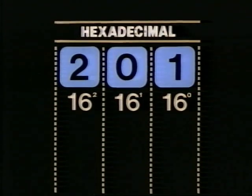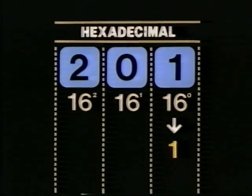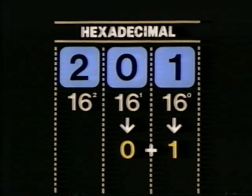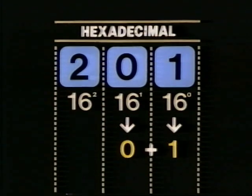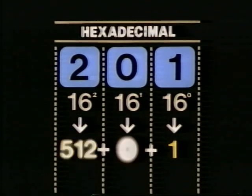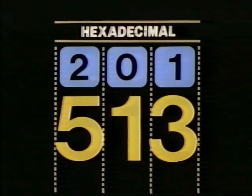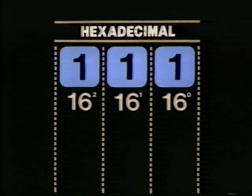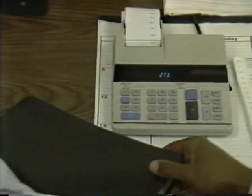Let's look at the hexadecimal number 201. It starts with one times sixteen to the zero, or one times one, or one. The second position is zero times sixteen to the first, or zero times sixteen, or zero. The third position is two times sixteen to the second, or two times two hundred fifty-six, or five hundred twelve. The total of all three positions is five hundred and thirteen. You can convert from hexadecimal to decimal by using the same technique you used for binary: take each digit, multiply by the power of the base, then add up the decimal values of all the digits.